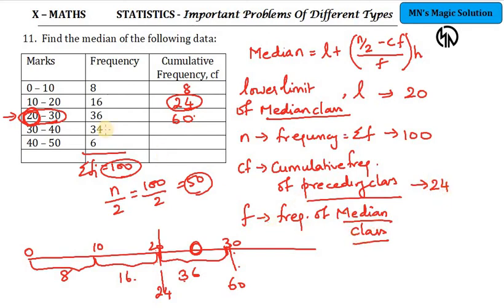Then, frequency of the median class. Median class is this. So, its corresponding frequency is 36. So, the value is 36. So, l, n, cf, f. These values, when you substitute it in the formula, you will get the median of this problem.